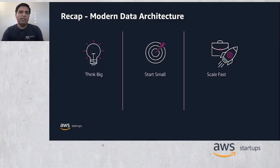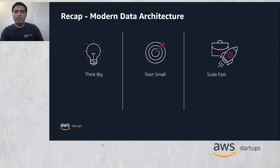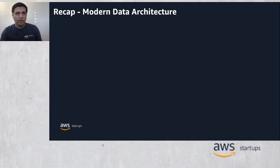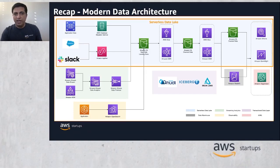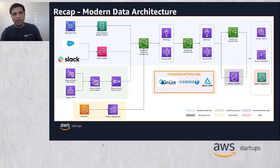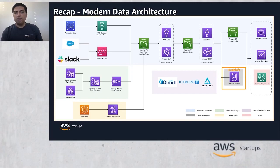Modern data architecture allows startup customers to think big, start small, and scale fast. It helps modularize architecture, increases your agility, and helps scale quickly as your business grows. You can easily add new data sources, scale the workloads up and down, and add new analytics workloads when the business demands. In the previous video of Analytics Byte series, we talked about modern data architecture and various segments such as serverless data lake, streaming data ingestion, transactional data lake, and Redshift, covering specific use cases, reference architecture using AWS services, and customer success stories.